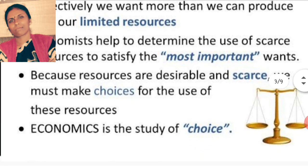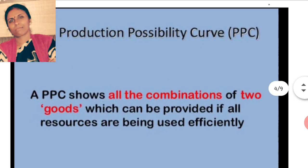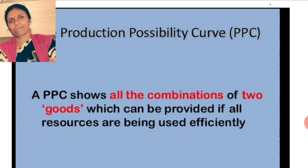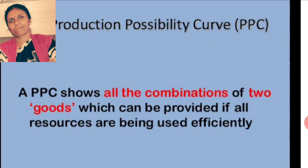Let us try to understand the production possibility curve. The production possibility curve shows all combinations of two goods which can be provided if all resources are being used efficiently. It shows all the combinations of two goods which can be provided if all resources are being used efficiently.